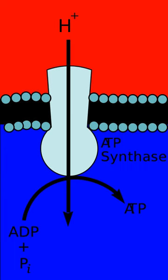Most eukaryotic cells have mitochondria, which produce ATP from products of the citric acid cycle, fatty acid oxidation, and amino acid oxidation. At the mitochondrial inner membrane, electrons from NADH and FADH2 pass through the electron transport chain to oxygen, which is reduced to water.